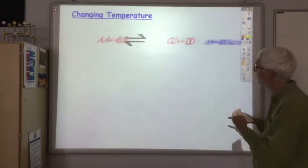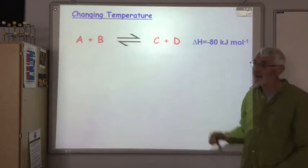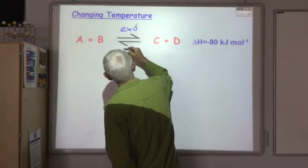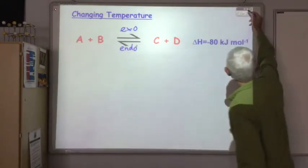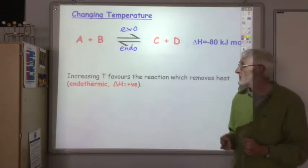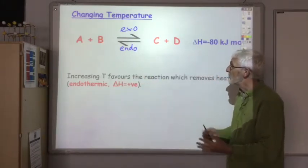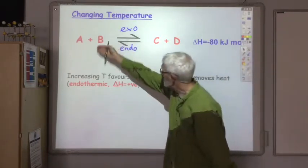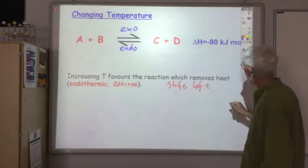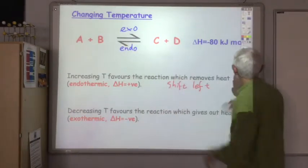Okay, what about changing temperature? So if you're given an equation like this, the delta H value of minus 80 refers to the forward reaction. So minus 80 is an exothermic reaction. So if we increase temperature, the system tries to reduce the temperature again. So it will favour the reaction which removes heat, the endothermic reaction, with positive delta H. So if we increase the temperature of this reaction, it will shift to the left. And if we decrease the temperature, it will try to increase the temperature by favouring the exothermic reaction. So it will shift to the right.